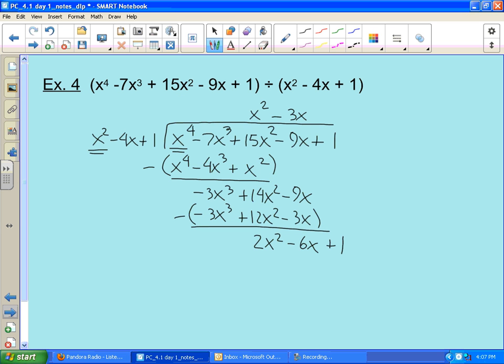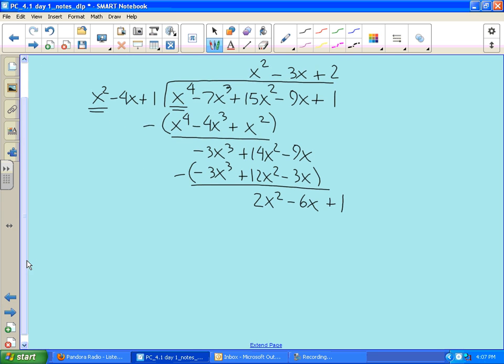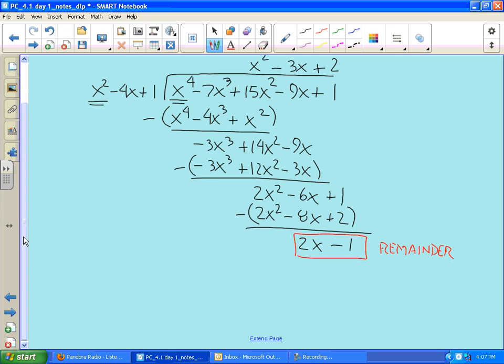What am I going to do to 2x² to make it become 2x²? I'm going to multiply it by 2. This becomes then 2x² - 8x + 2, subtracting. We get -6 + 8 is 2x, and then 1 - 2 is -1. Nothing else to drop down, which means this is my remainder. So my answer could be x² - 3x + 2 with a remainder of 2x - 1.